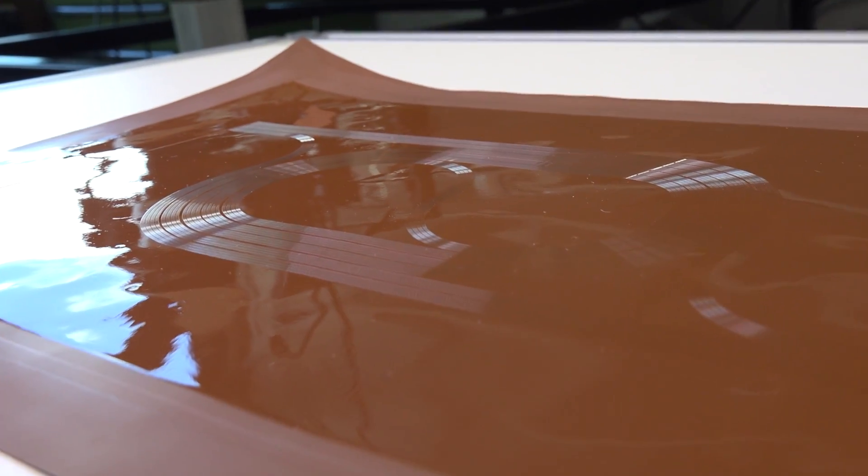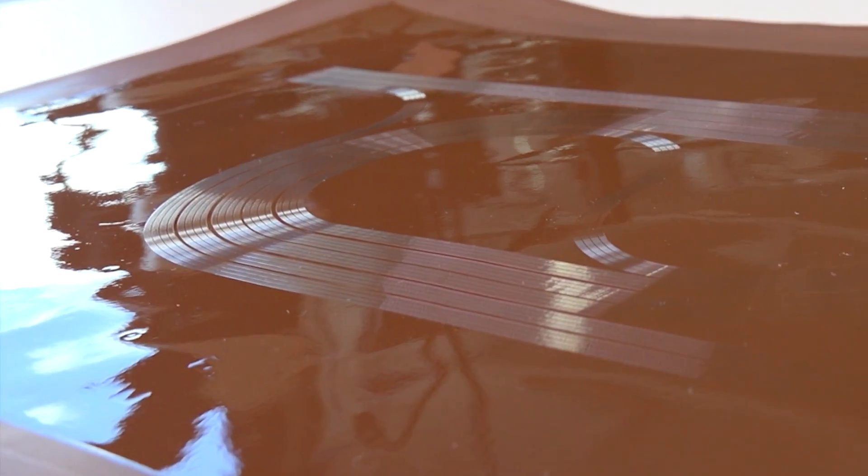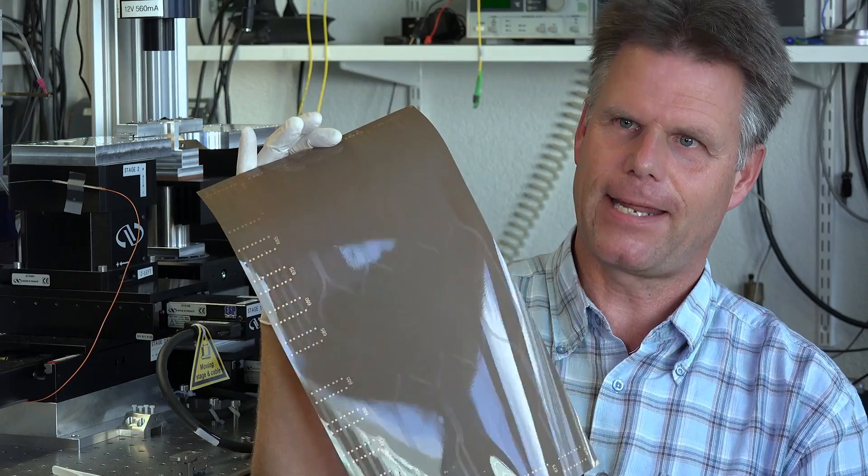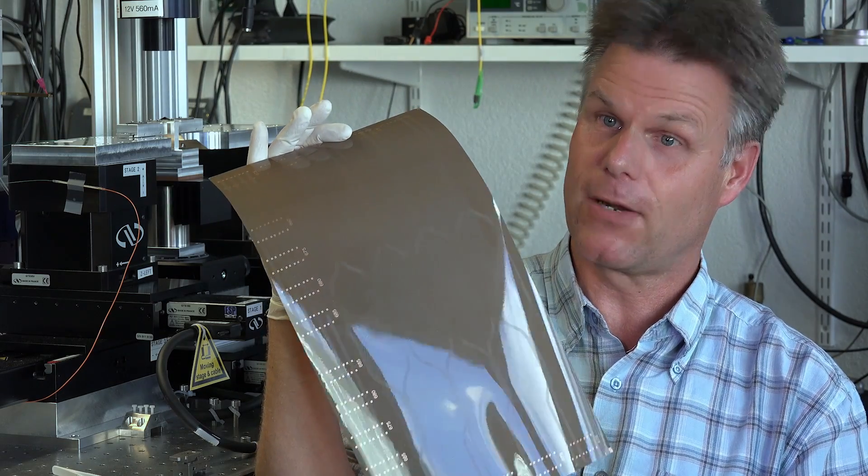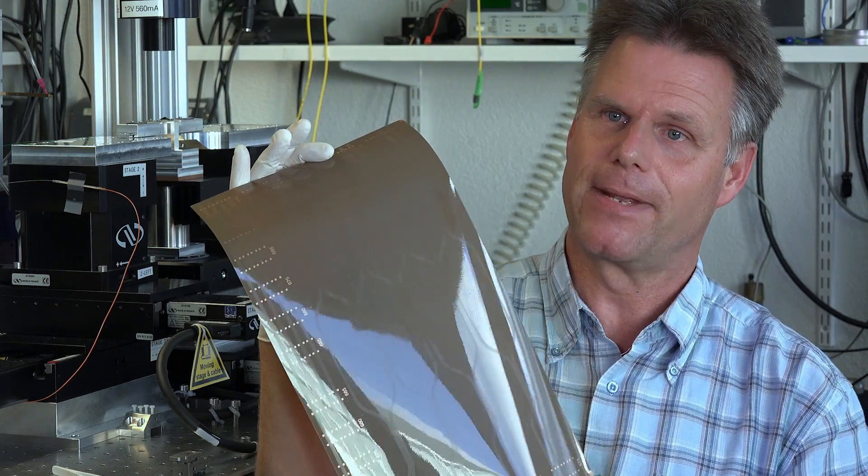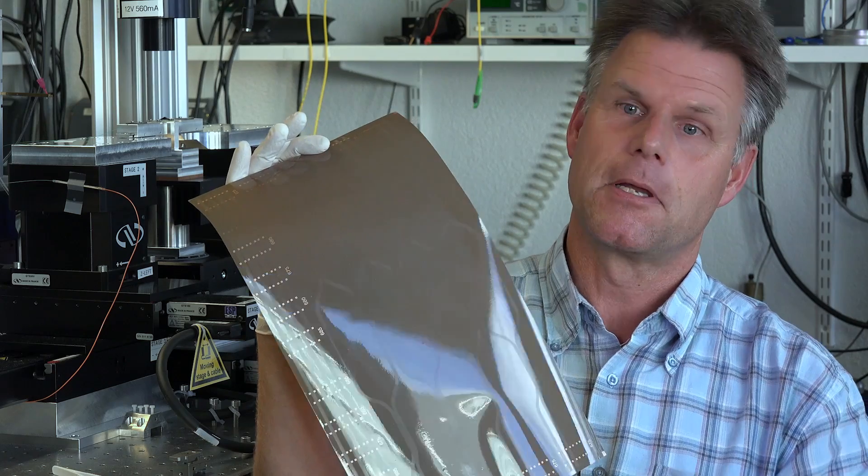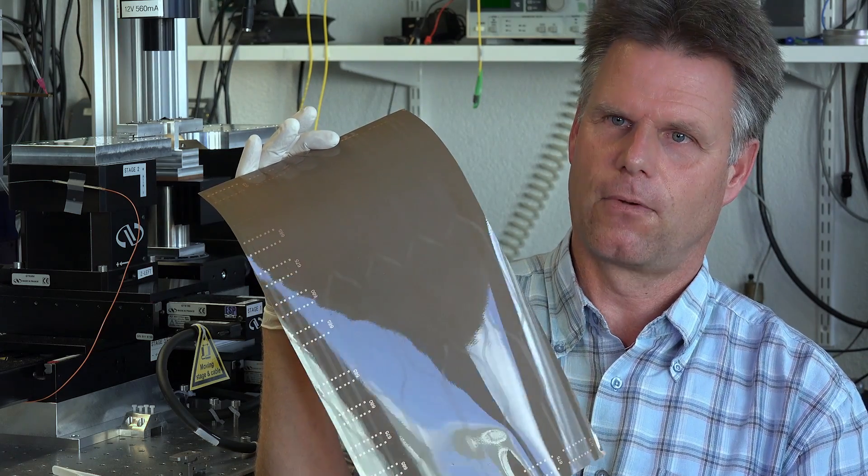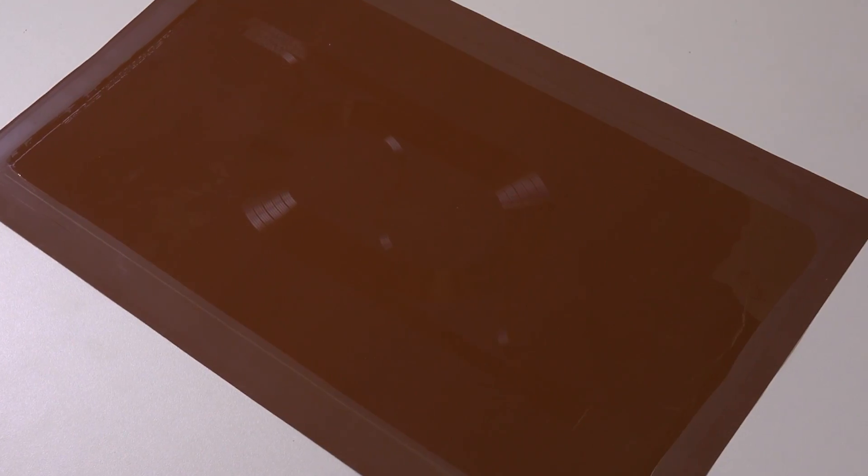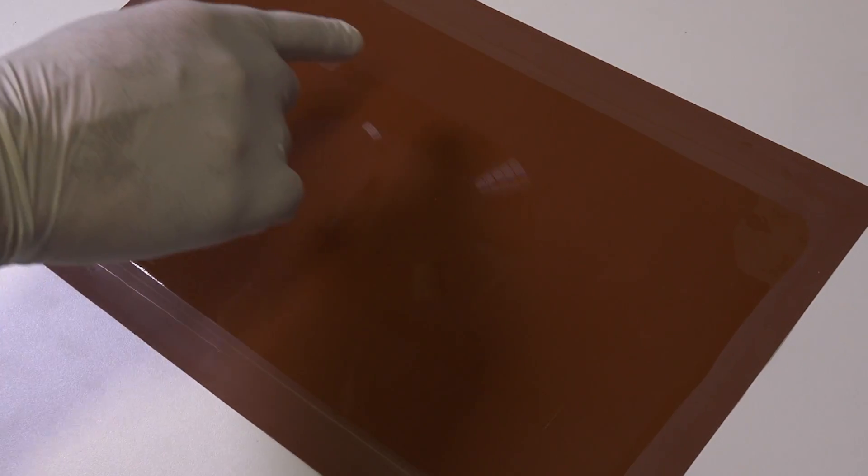What we have here is a thin sheet of polyimide with several layers of a dedicated polymer material which is very transparent for the wavelengths we want to transmit. In this we have structured, in principle, the equivalent of optical fibers but now as an integrated technology in this flex panel.